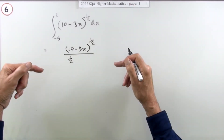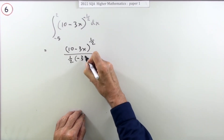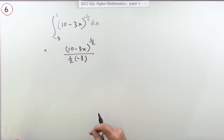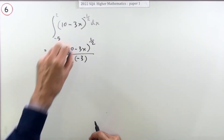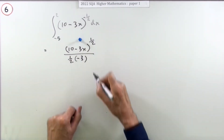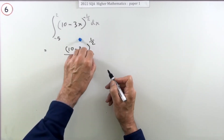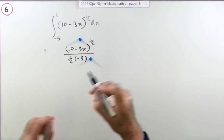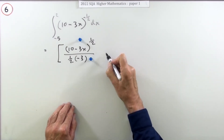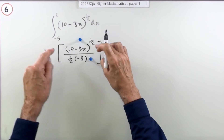Just writing that down gets you two of the four marks: one mark for doing the outside part, and another mark for dividing by the inner derivative. But you've still got to evaluate this, so I'm not going to put plus c — though you could — because once you've worked it out twice and subtracted, the c's would just cancel each other out.